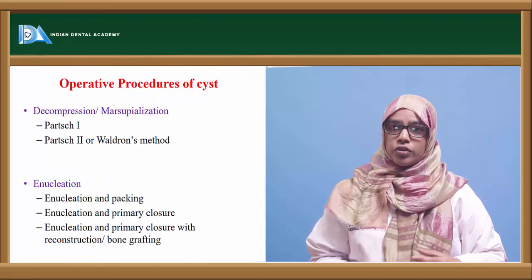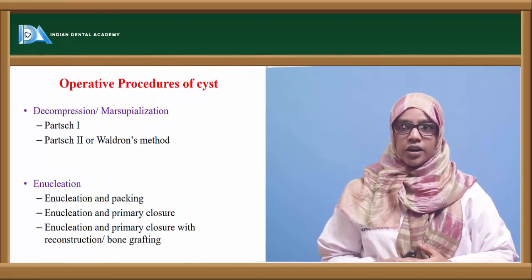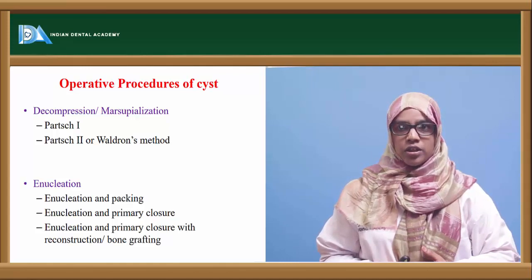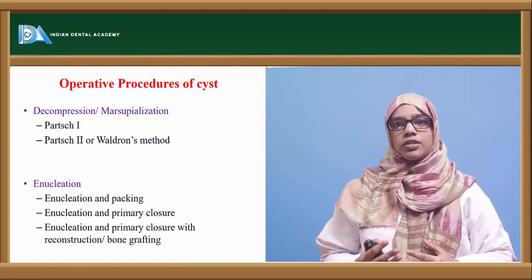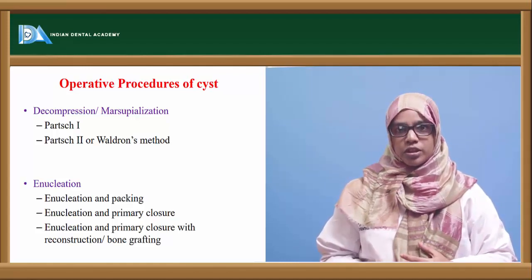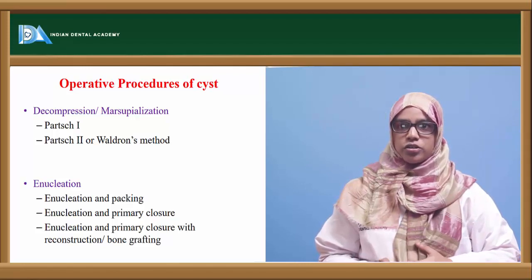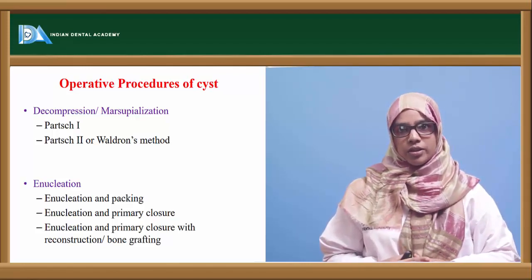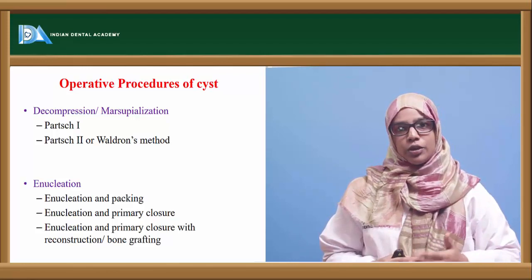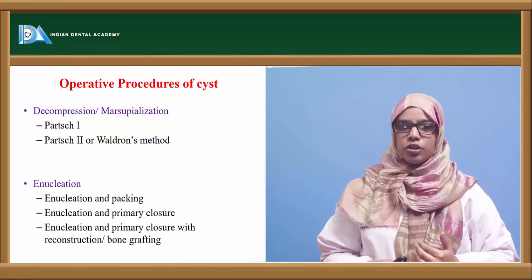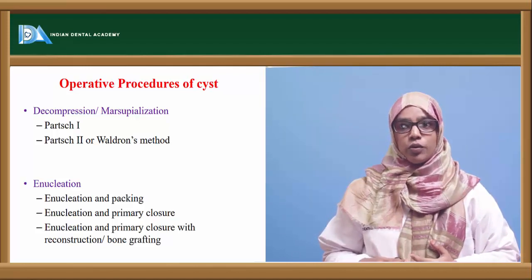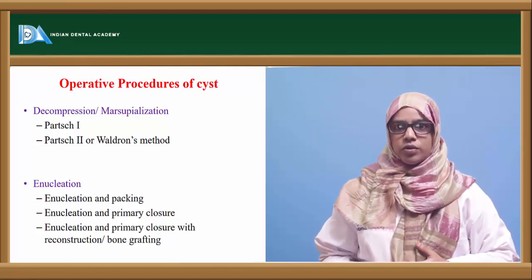The treatment of cystic lesions can be divided into decompression, marsupialization, and enucleation. Decompression is a more conservative approach and is of two types: Phase 1 and Phase 2, where Phase 2 is also termed Waldron's method. Enucleation can be done as enucleation and packing, enucleation with primary closure, or enucleation with primary closure and reconstruction with bone graft.